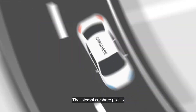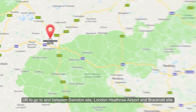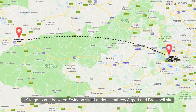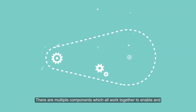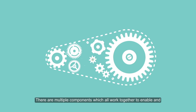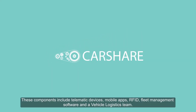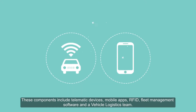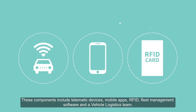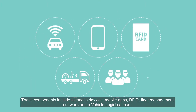The Internal Car Share Pilot is designed to allow employees based in the UK to go between Swindon site, London Heathrow Airport and Bracknell site. There are multiple components which all work together to enable and run a car share. These components include telematic devices, mobile apps, RFID, fleet management software and a vehicle logistics team.